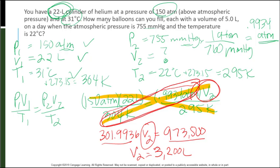But we're not quite done. It wants to know how many balloons we can fill. And each balloon has a volume of 5.0 liters. So let's divide this by 5.0 liters to figure out how many balloons we can fill. And I got 640 balloons.